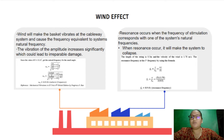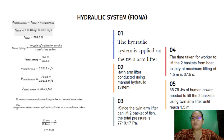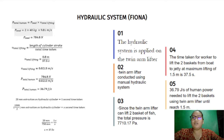Resonance occurs when the frequency of stimulation corresponds with one of the system's natural frequencies. Where resonance occurs, it will cause the system to collapse. The resonance frequency our group obtained is 8.9 Hz. For the hydraulic system applied on the twin arm lifter, using a manual hydraulic system, the total pressure is 7710.17 Pascal. The time taken for workers to lift two baskets from the boat to the jetty at a maximum lifting height of 1.5 meters is 37.5 seconds.